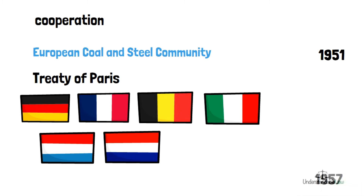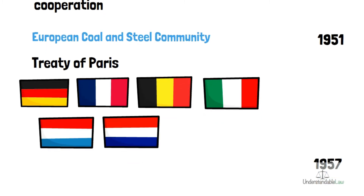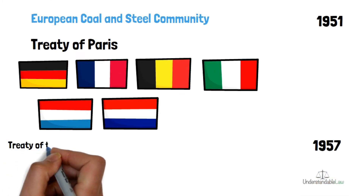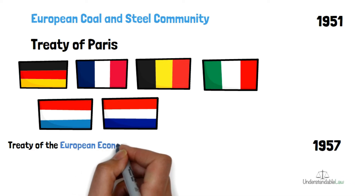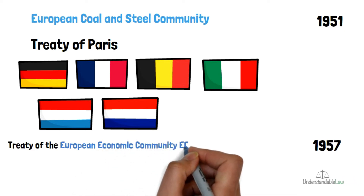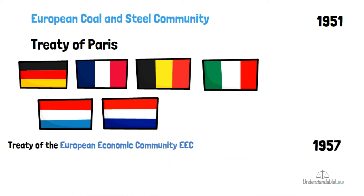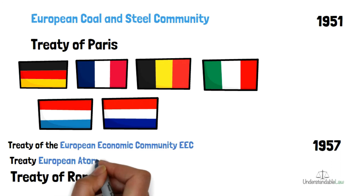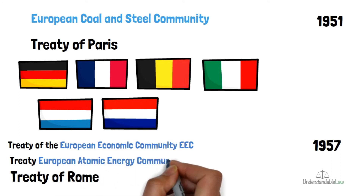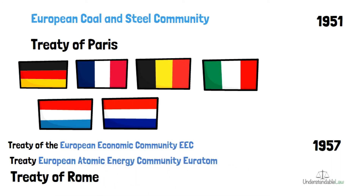Two treaties were signed in 1957: the Treaty Establishing the European Economic Community, abbreviated EEC — also called the Treaty of Rome because they were signed in Rome — and the Treaty Establishing the European Atomic Energy Community, abbreviated Euratom.